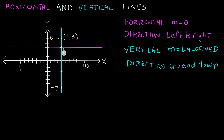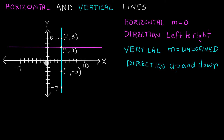So looking at this next point right here, we have a y component of three. So we'll put three in the y position of our point. And then we have an x component of four. Going down to this point right here, we have a y component of negative three, and we have an x component of one, two, three, four — so four is our x component.